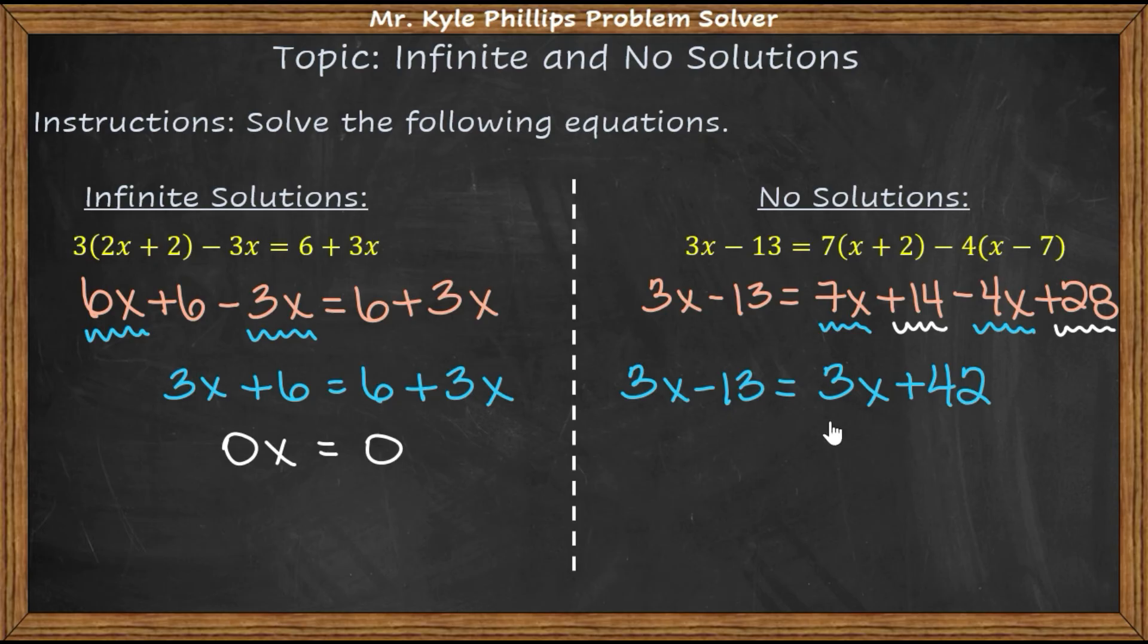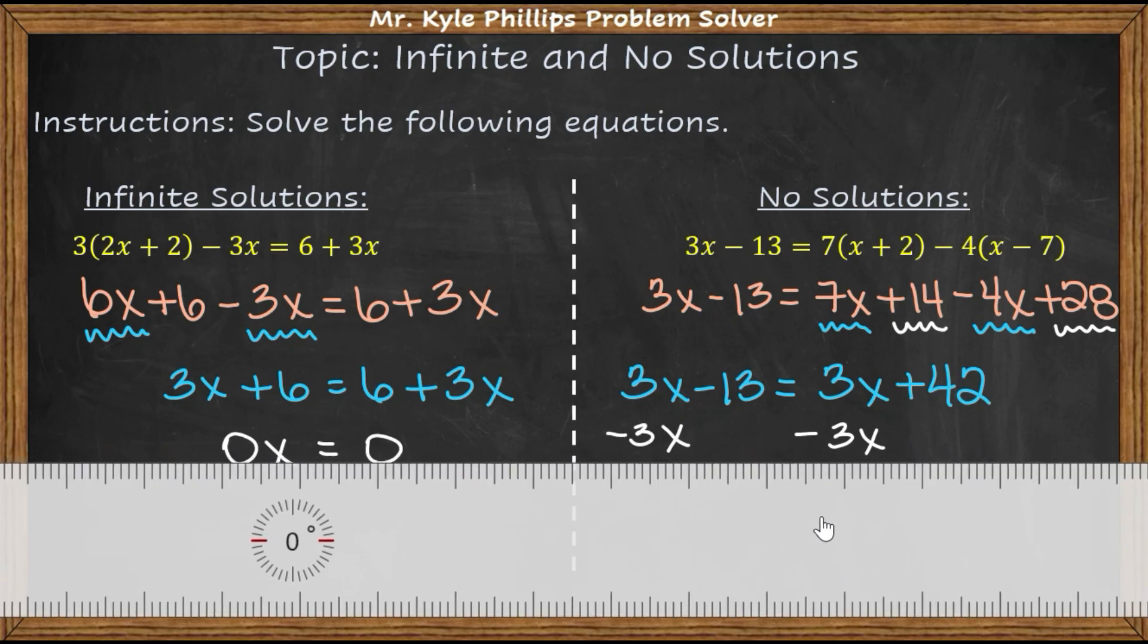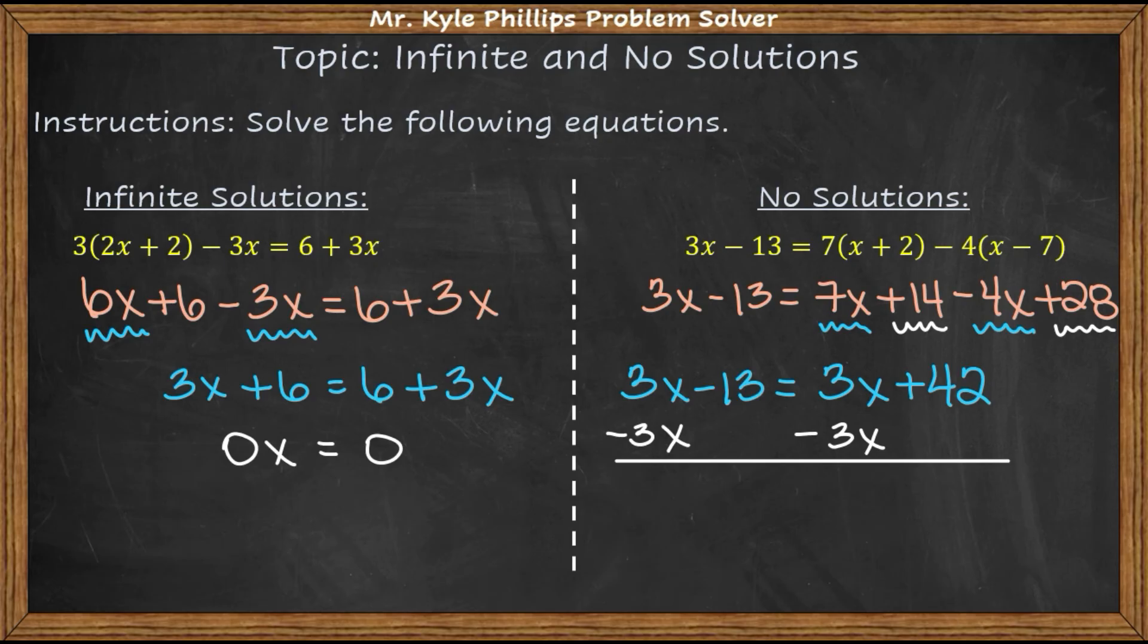Now here we're going to finish solving. So I'm going to subtract 3x from both sides. And now what I have is negative 13 equals 42. This will always happen with no solutions. The x's will cancel. The numbers that are left are not the same. And you can even notice that here.